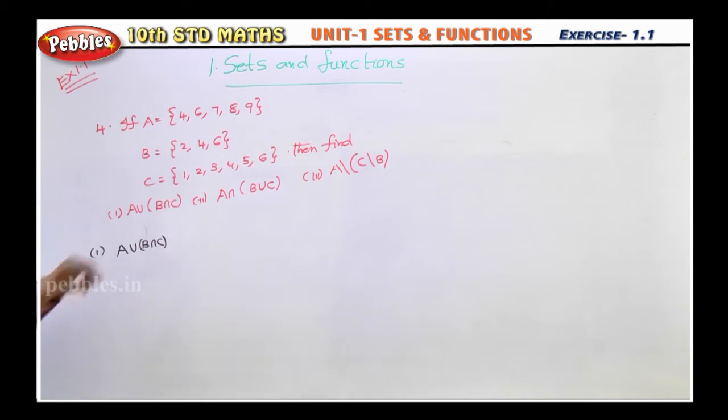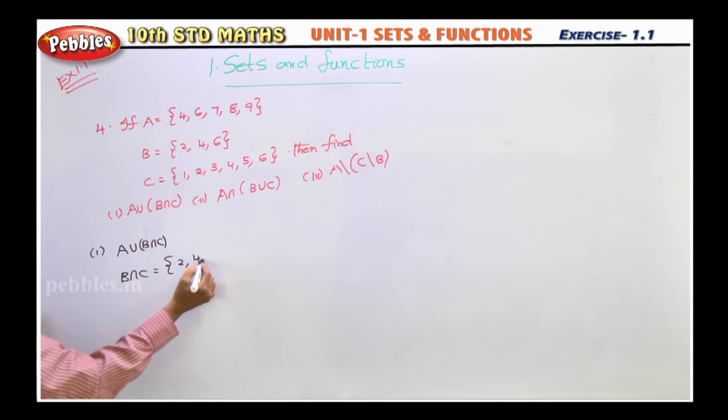First, A union B intersection C. That means what? First, you have to find B intersection C. Whatever present inside the bracket, you find out first. So, B intersection C. You write down the B set now: 2, 4, 6.